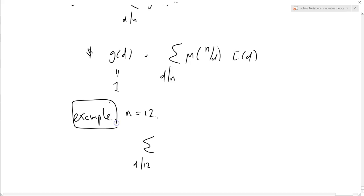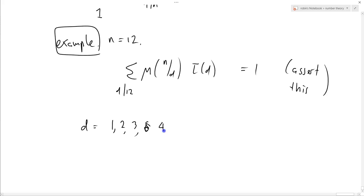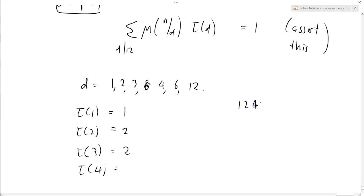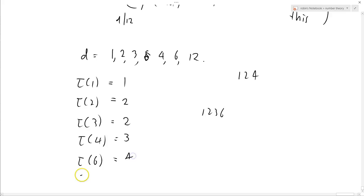So I'm asserting that sum over d divides 12 of μ(n/d) times τ(d) equals 1. That's what the Möbius formula implies, so it better be right. Well let's try it. d has got to equal 1, 2, 3, 4, 6, and 12. τ(1) equals 1, τ(2) equals 2. τ(3) equals 2 again. τ(4) equals 3. τ(6), what numbers divide 6? 1, 2, 3, and 6, that's 4.